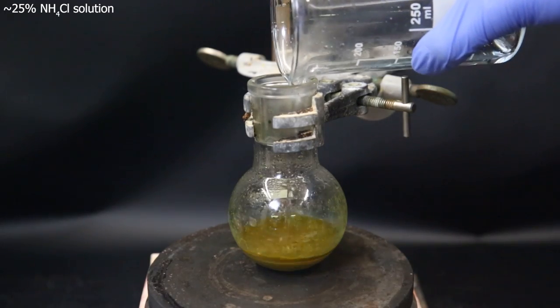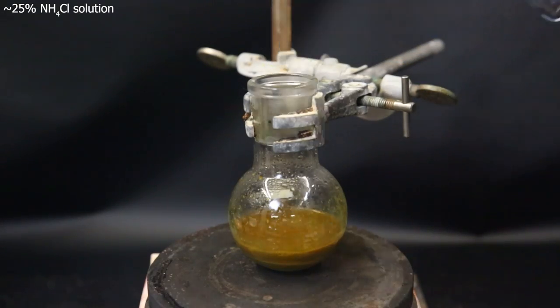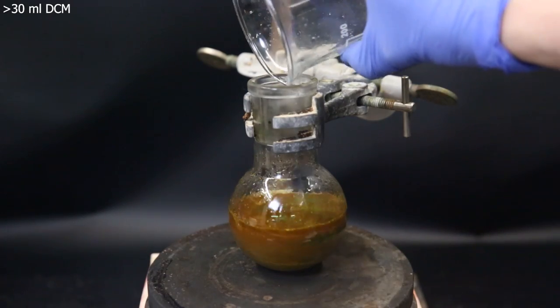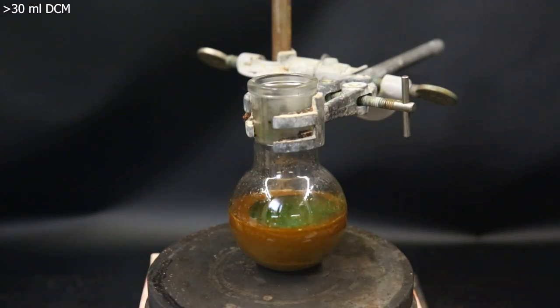Now to remove most of the catalyst, I dilute the reaction mixture with a 25% ammonium chloride solution. I then add about 30ml of DCM to extract the product.